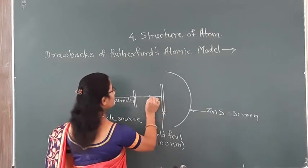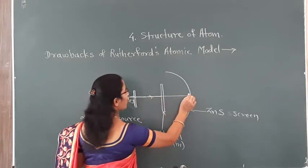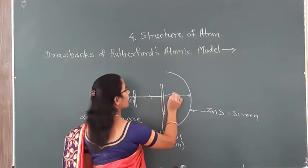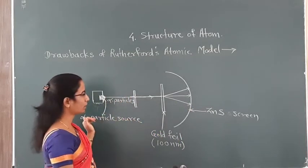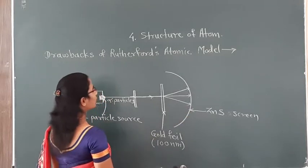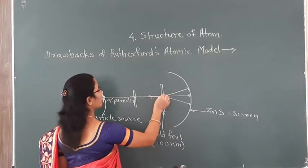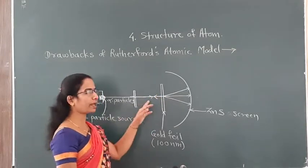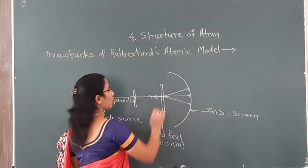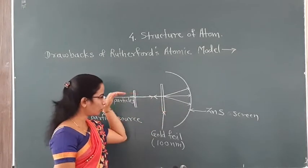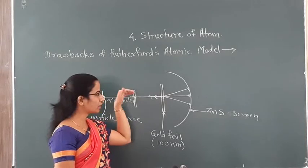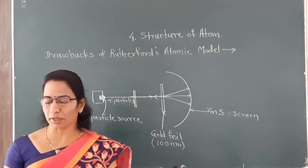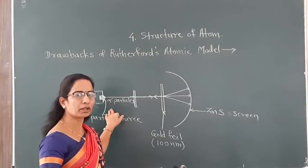The observations were: most alpha particles passed straight through the gold foil. Very few alpha particles were deflected at certain angles and struck the zinc sulfide screen. Almost one in every lakh alpha particles was deflected back through an angle of 180 degrees. Some alpha particles were deflected through an angle less than 90 degrees. Most alpha particles passed through in a straight line direction. On the basis of this experiment, he made some conclusions.